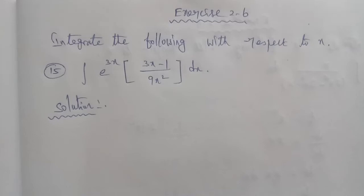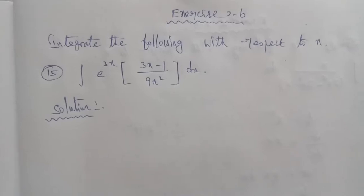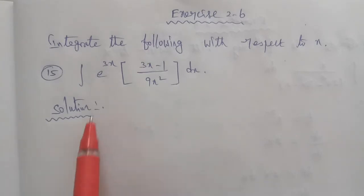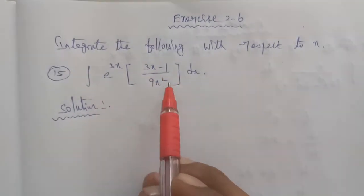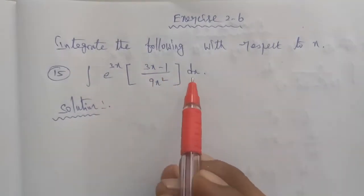Hi students, I am Gopinath. 12th Business Maths, Exercise 2.6, question number 15. Integrate the following with respect to x: integral of e power 3x times (3x minus 1) by 9x squared dx.